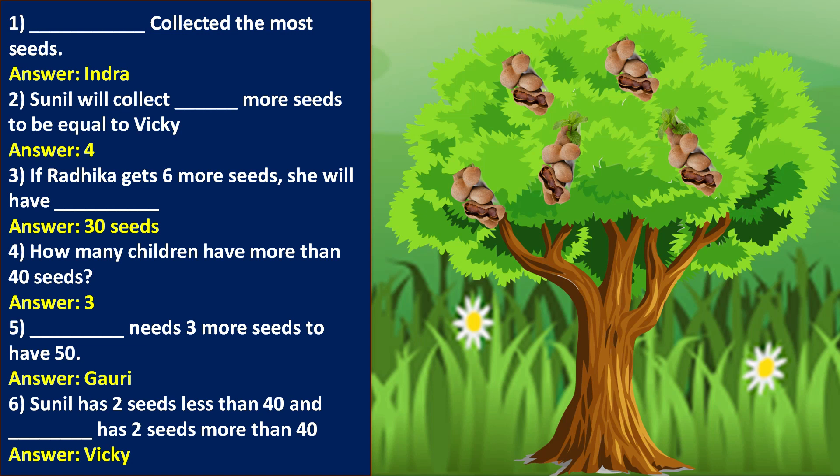Question 4: Three children have more than 40 seats. Question 5: Gauri needs 3 more seats to have 50. Question 6: Sunil has 2 seats less than 40, and Vicky has 2 seats more than 40.